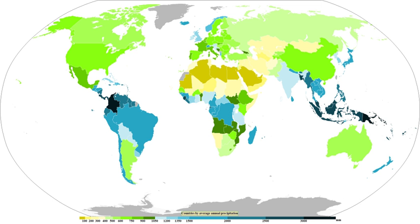Rainforests are characterized by high rainfall, with definitions setting minimum normal annual rainfall between 1,750 and 2,000 mm. A tropical savanna is a grassland biome located in semi-arid to semi-humid climate regions of subtropical and tropical latitudes, with rainfall between 750 and 1,270 mm a year. They are widespread in Africa, and are also found in India, the northern parts of South America, Malaysia, and Australia.